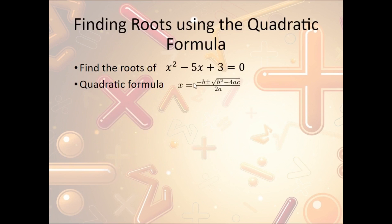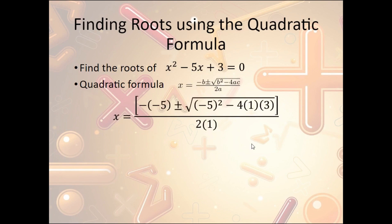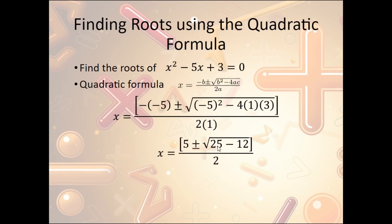Let's work through x squared minus 5x plus 3 equals zero using the quadratic formula. Plugging in: negative b becomes negative negative 5, which is positive 5. Then under the square root: negative 5 squared is 25, minus 4 times 1 times 3, which is negative 12. Over 2 times 1, which is 2. We simplify: 25 minus 12 is 13. So we get 5 plus or minus the square root of 13, all over 2.